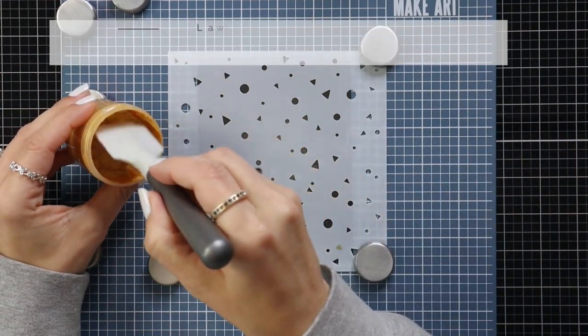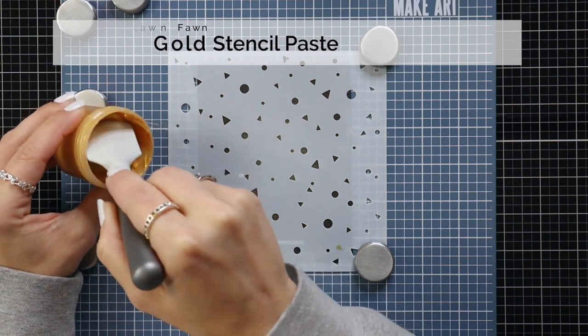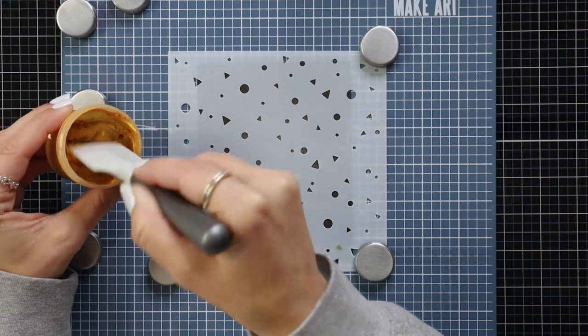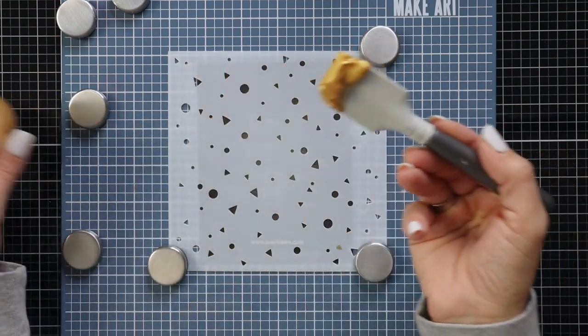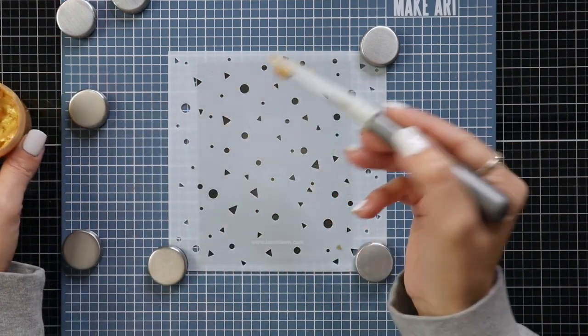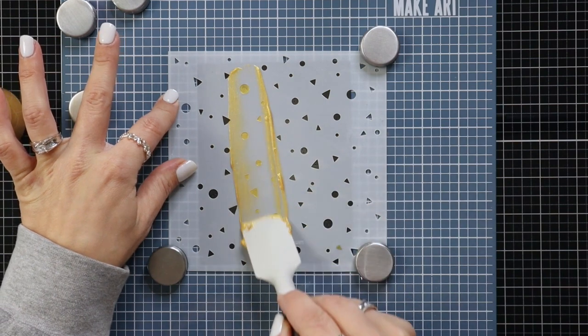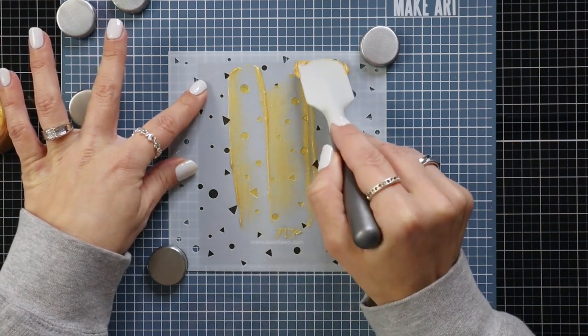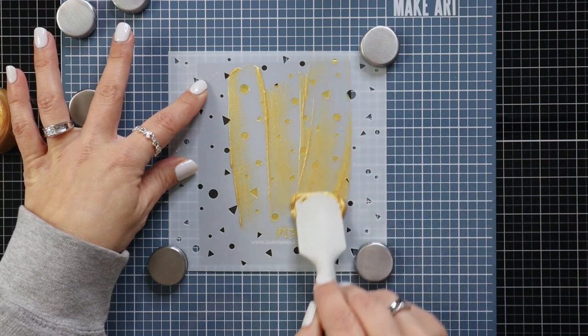I placed my background on my make art station and I'm holding the stencil in place with my magnets. Then I'm taking a silicone spatula and I'm just going to scoop out some of the gold stencil paste and I'm going to spread this over my entire panel here. Now this spreads super easy so I'm just applying that and I'm going to drag that down making sure to fill in all of those areas of the stencil.